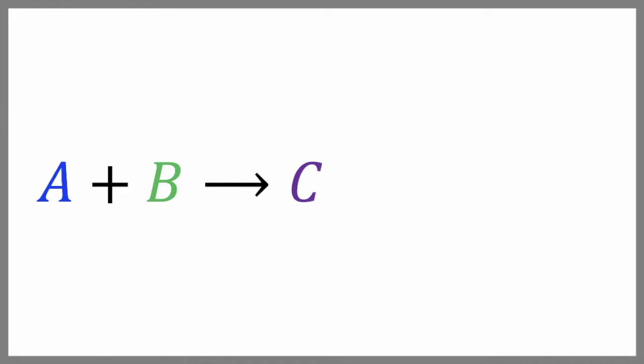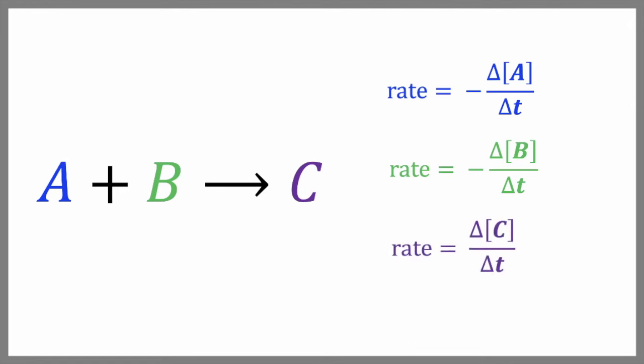Let's take the reaction A plus B reacts to produce C. We can get the following three reaction rates. Notice that the first two have a negative sign in front of them because they're being used up. Since rates are positive, we need to correct for this and we put a minus sign in front of them. The third one is positive because C is being formed.